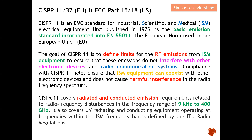CISPR 11 covers both radiated and conducted emission requirements related to RF disturbance in the frequency range of 9 kilohertz to 400 gigahertz. However, testing up to 400 gigahertz is quite challenging at this moment — for radiated emission, testing typically stops around 6 gigahertz, so 400 gigahertz is a bit of a stretch. It also covers equipment operating at frequencies within the ISM band, as defined by the ITU Radio Regulations.